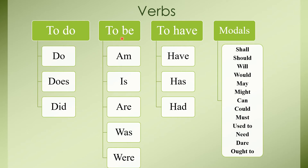Now the 'to be' family: am, is, are — and was and were. Am, is, are are the present forms of the verb, and was and were are the past forms — yeh past form of verb hai, jho hum past mein use karenge. Then the 'to have' family — the third family. In it we have 'have', 'has', and 'had'. Have and has are present forms used in present tense, and 'had' is the past form.